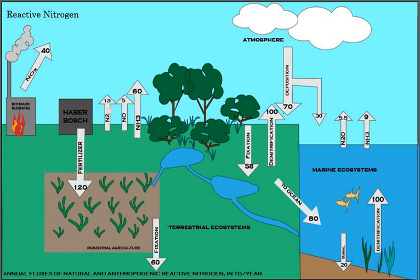The processes in the nitrogen cycle transform nitrogen from one form to another. Many of those processes are carried out by microbes, either in their effort to harvest energy or to accumulate nitrogen in a form needed for their growth. For example, the nitrogenous wastes in animal urine are broken down by nitrifying bacteria in the soil to be used by plants. The diagram alongside shows how these processes fit together to form the nitrogen cycle.